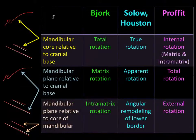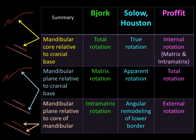Summarizing the content: the angular changes in the mandibular core related to the cranial base has been called total rotation by Bjork, true rotation by Solow and Houston, and internal rotation by Prophet. The angular changes in the mandibular plane related to the cranial base has been called matrix rotation by Bjork, apparent rotation by Solow and Houston, and total rotation by Prophet. Angular changes in the mandibular plane relative to the core of the mandible has been called intramatrix rotation by Bjork, angular remodeling of the lower border by Solow and Houston, and external rotation by Prophet.